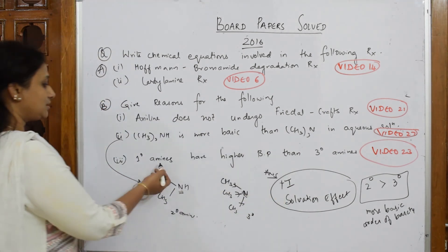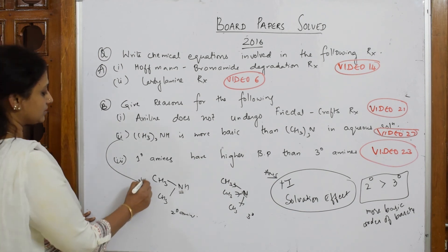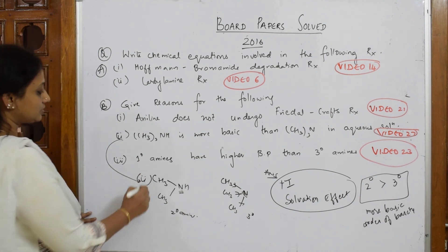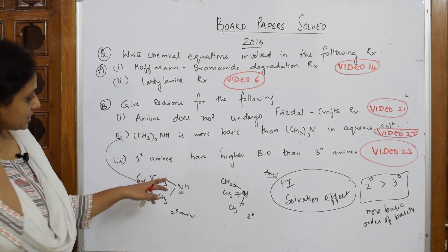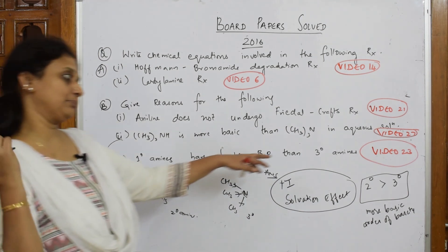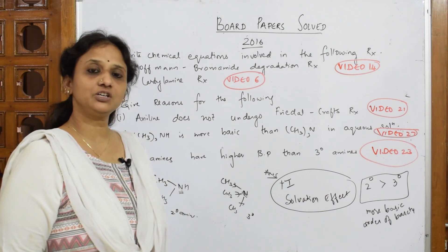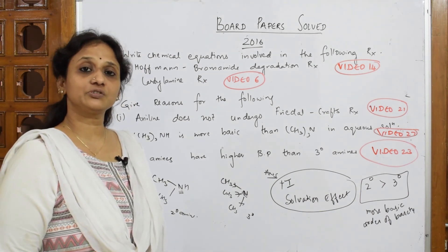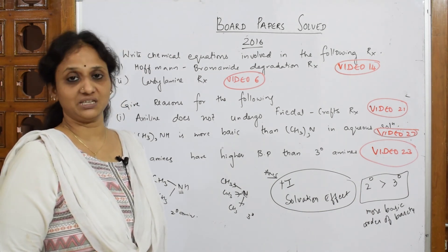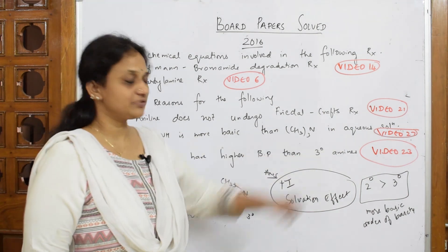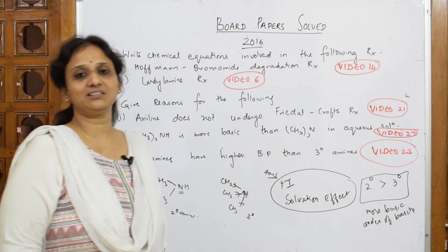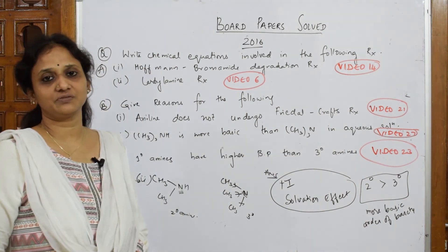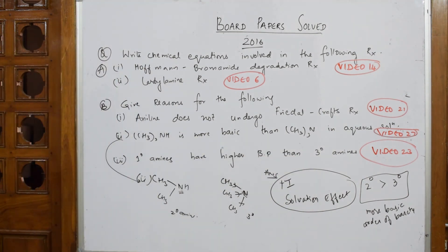Third question: primary amines have a higher boiling point than tertiary amines. I have done this video — comparing the boiling points of isomeric amines — which is video number 23. Please watch the video.